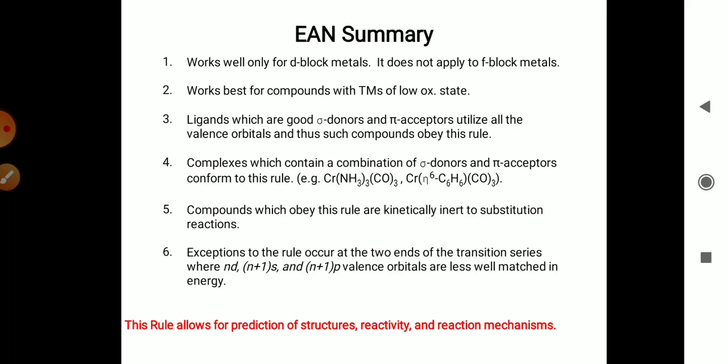Summary of EAN: It works only for d-block metals and does not apply to f-block orbitals. It works best for compounds with transition metals having low oxidation state. Ligands which are good sigma donors and pi acceptors utilize all the valence orbitals, and such compounds obey the 18 electron rule or EAN rule.